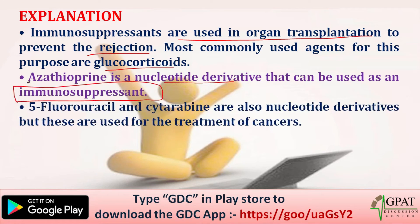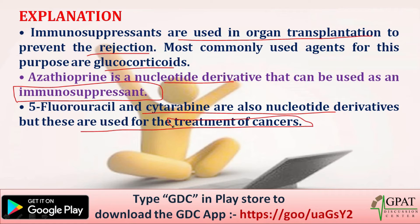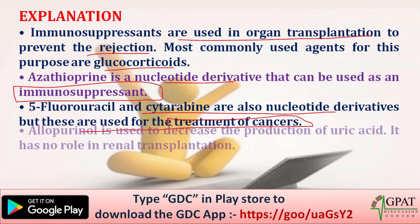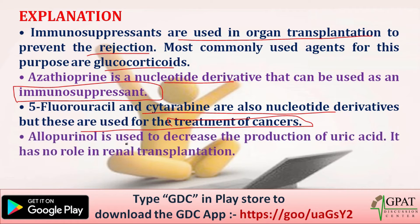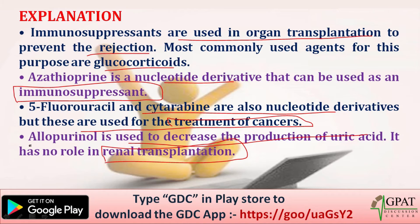5-fluorouracil and cytarabine are also nucleotide derivatives but they are used for the treatment of cancers. Allopurinol is used to decrease the production of uric acid and has no role in renal transplantation — it is used in gout. So the correct answer is A, azathioprine.